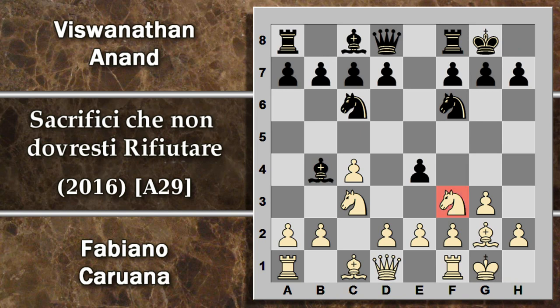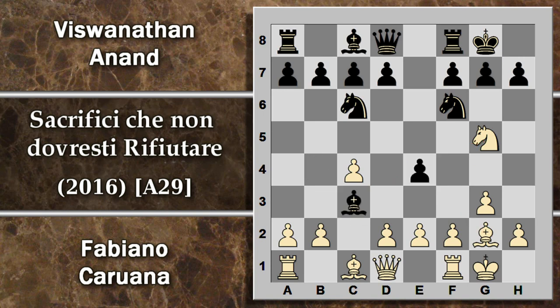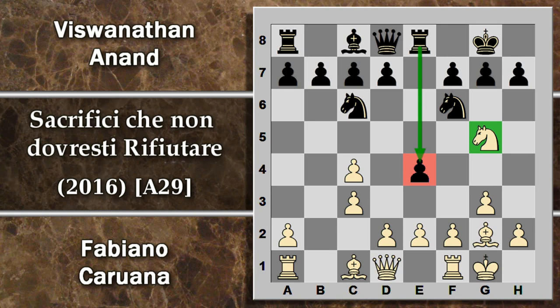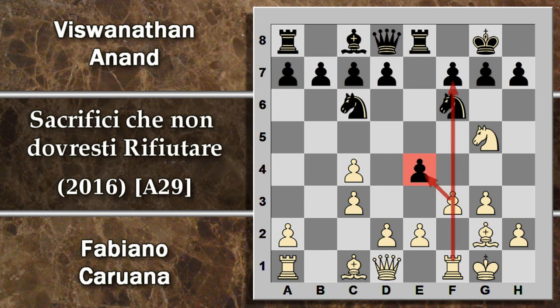Si va intanto a disturbare questo cavallo. Gioca abbastanza facile per il bianco perché dopo cavallo G5 questo è attaccato tre volte. Non c'è un modo valido per difendere se non cambiare l'alfiere sul cavallo, ed è quello che viene fatto. Il bianco cattura verso il centro, cominciano ad ammassarsi i pedoni bianchi al centro. La torre 8 per difendere il pedone. Questo cavallo sembra in una posizione un pochino rischiosa perché rischia eventualmente di venire intrappolato. Ecco perché viene giocata F3, tentativo di minare questo pedone.